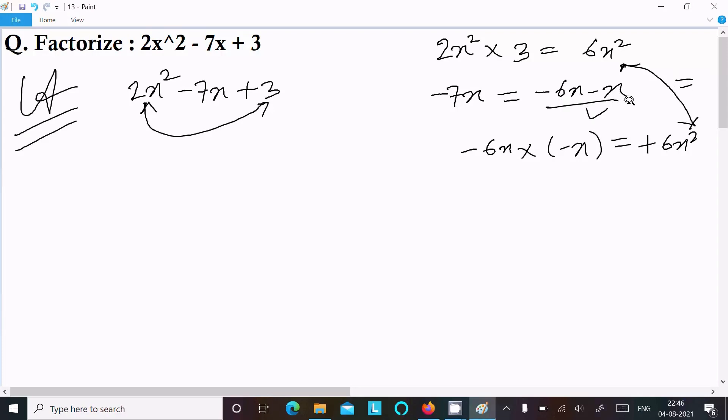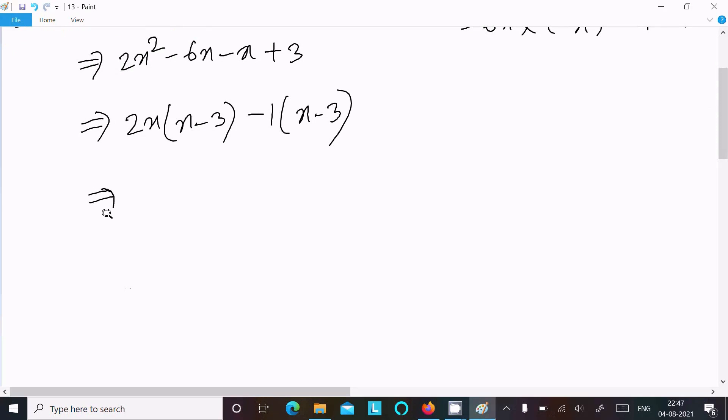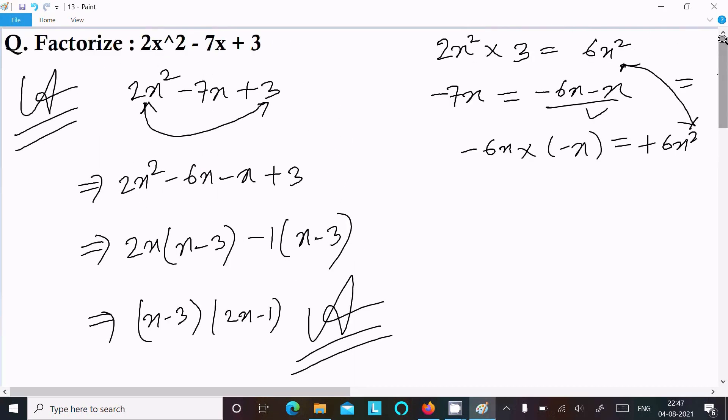Okay, so now here I am writing 2x² - 6x - x + 3. After that, 2x is the common here, you can get x - 3. Negative 1 is the common, x - 3. Here you can get 2x - 1. So this is the answer: (2x - 1)(x - 3).